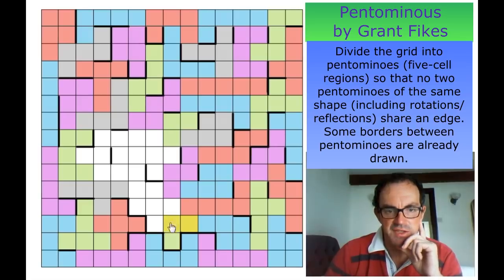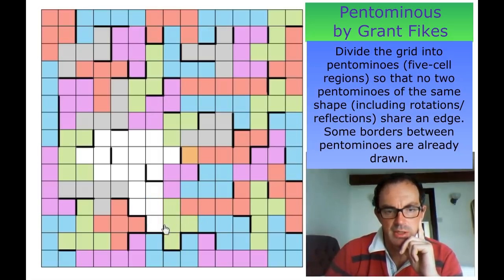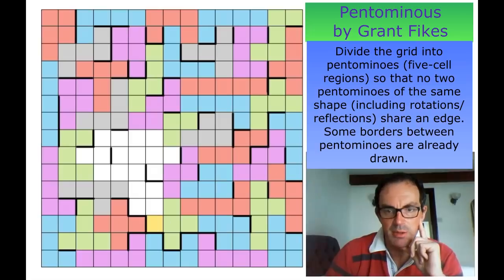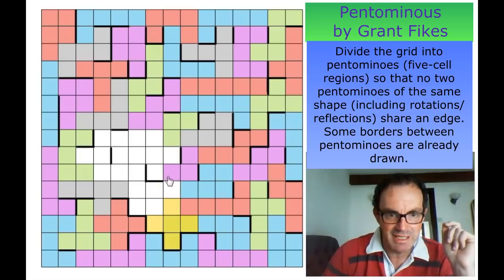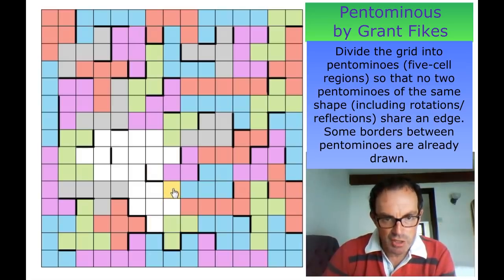We know it's not isolated, so I've got to take this square with the green. Now what do I do — I can't isolate this square. This square has to be part of a pentomino, and the only pentomino it can be part of is the green — and that's going to connect two X pentominoes together. So this shows this square is definitely not purple.